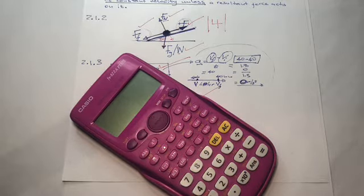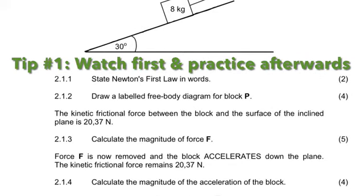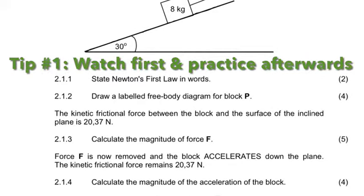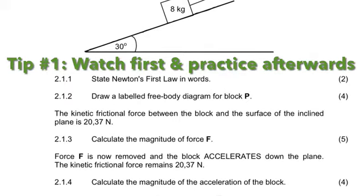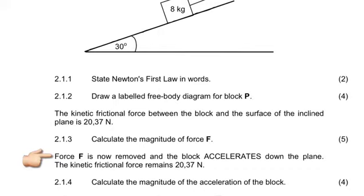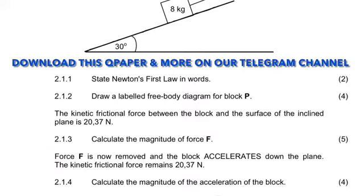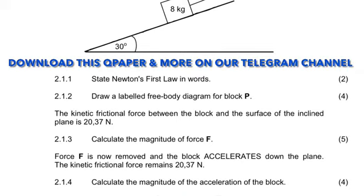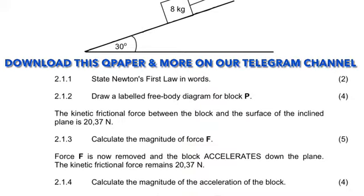Let's move to question 2.1.4. The statement given says: force F is now removed and the block accelerates down the plane. The kinetic frictional force remains the same, which is 20.37 newtons from the previous questions. Question 2.1.4 asks us to calculate the magnitude of the acceleration of the block.